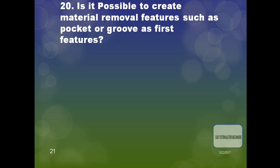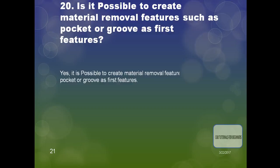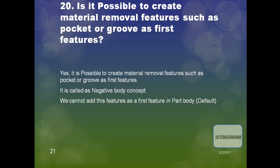The next question is: is it possible to create material removal features such as a pocket or groove as the first feature? Yes, it is possible — this is called the negative body concept, which comes under Boolean operations. However, we cannot add these features as the first feature in the default part body, because the default part body cannot be a negative body.